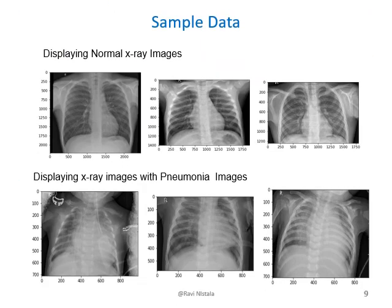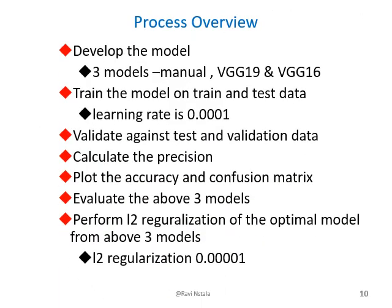This slide shows sample data. The first row contains the normal X-ray images and the second row shows the X-ray images of pneumonia patients. This slide talks about the process overview on how the project was developed and executed. Three models were chosen: a manual model and two pre-trained models from Keras applications called VGG19 and VGG16. New top layers were added to the two pre-trained models, and all three models were trained using the train data and tested using the test and validation data.